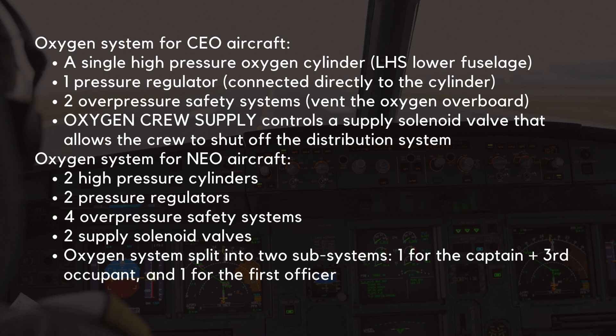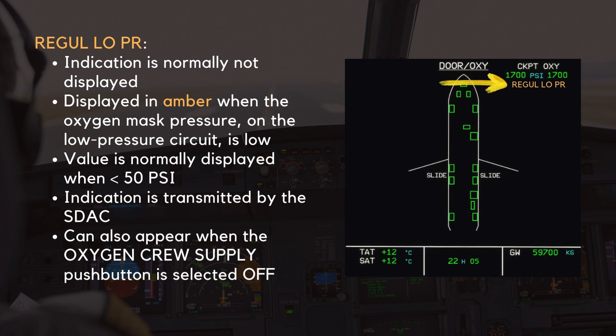The oxygen system on NEO aircraft is split into two subsystems: one for the captain and a third occupant, and one for the first officer. The regulator low-pressure indication is normally not displayed. It appears in amber when the oxygen mask pressure on the low-pressure circuit is low, typically when below 50 PSI. This indication is transmitted by the S-Stack, and can also appear when the oxygen crew supply push button is selected off.